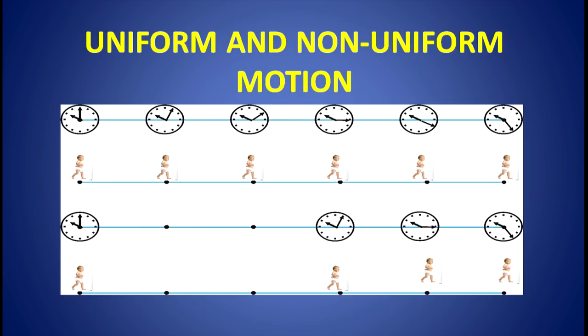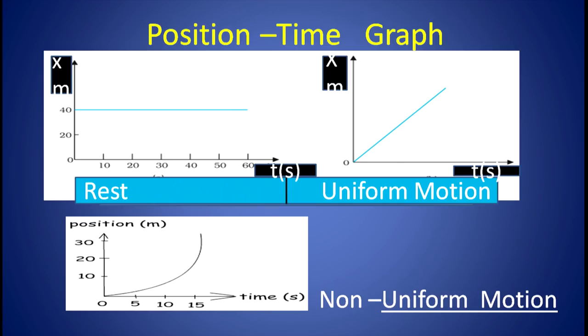Now, let us discuss uniform and non-uniform motion. You can observe the figure on your screen. In the first figure, the person is covering equal distance in equal interval of time. Hence, the motion is uniform. But in the next figure, the person is covering unequal distance in equal interval of time. Hence, the motion is non-uniform. So, if an object covers equal distance in equal interval of time, its motion is called uniform motion.